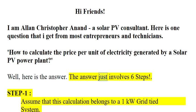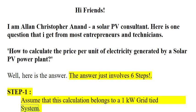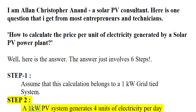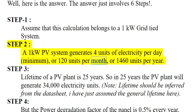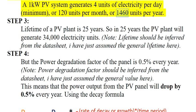The answer just involves six steps. Step 1: Assume that this calculation belongs to a 1 kW grid-tied system. Step 2: A 1 kW PV system generates 4 units of electricity per day minimum, or 120 units per month, or 1,460 units per year.